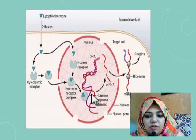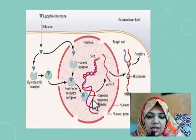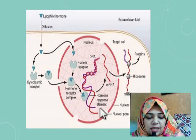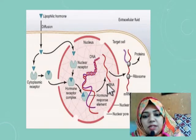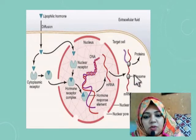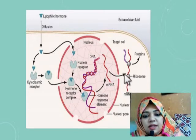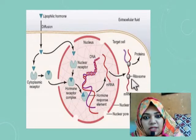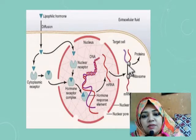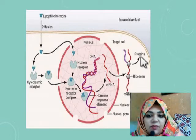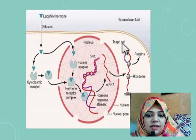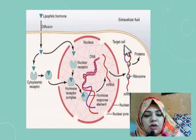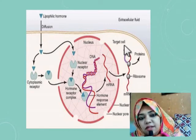The activated hormone-receptor complex then enters into the nucleus. In the nucleus, it binds with a specific portion of the DNA strand called the hormone response element, and this induces the transcription process, forming messenger RNA. The messenger RNA then diffuses into the cytoplasm and increases the translation process at the ribosomes, resulting in the formation of new proteins.